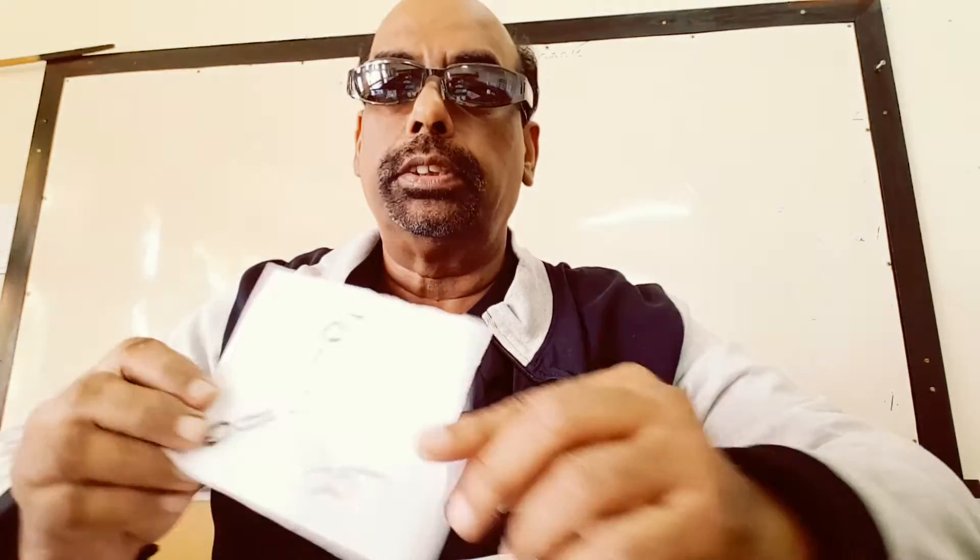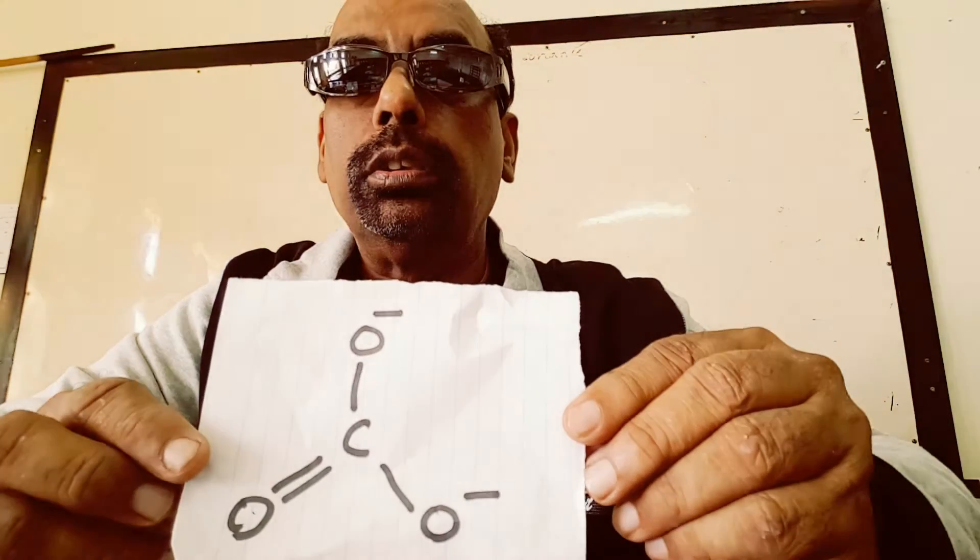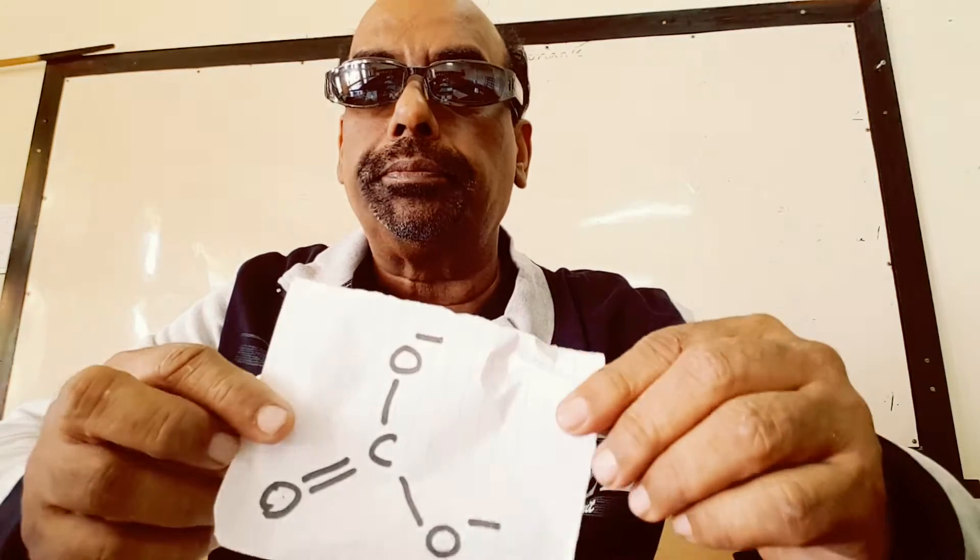Today our topic of discussion will be on carbonate. Carbonate has the formula CO₃. It has three oxygen atoms bonded to one carbon atom. It is an anion — more precisely, it is dinegative. The overall oxidation state of carbonate is minus 2. The structure of carbonate is as shown.